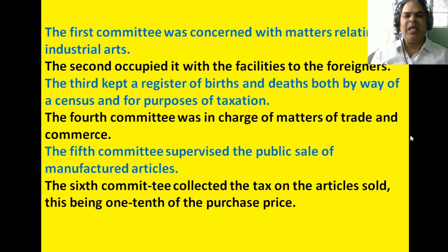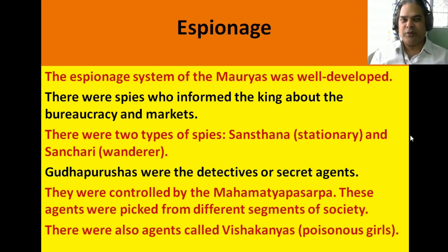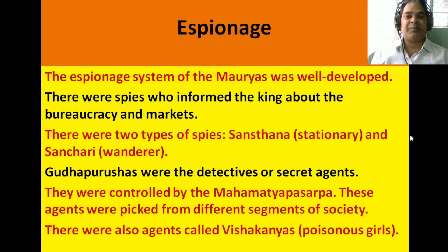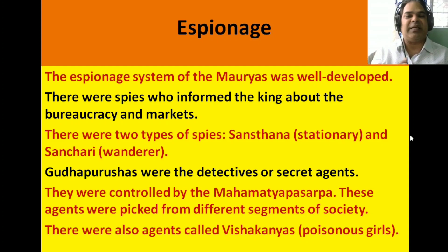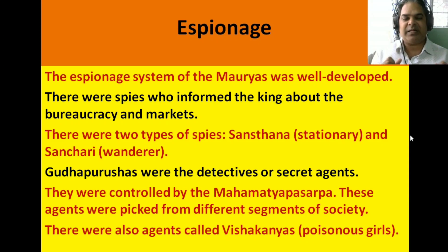Espionage means spy system. The espionage system of the Mauryas was well developed — just as today we have the IB and RAW to alert the government. During the Mauryan Empire, the spy system was very strong. There were spies who informed the king about the bureaucracy and the markets. There were two types of spies: stationary spies called Santhana, who lived in one place, and wandering spies called Sanchari, who wandered from place to place collecting information.